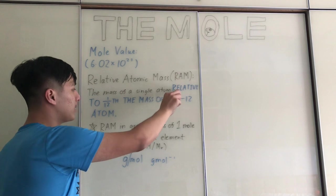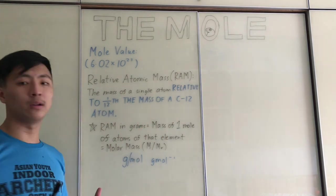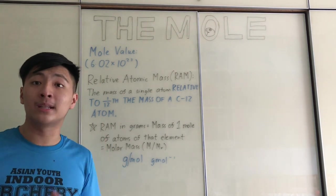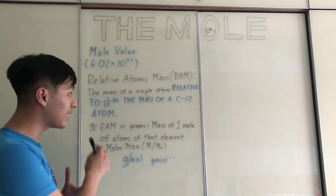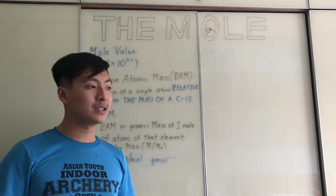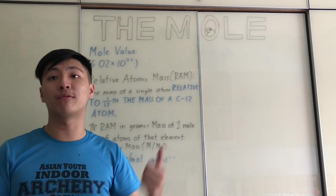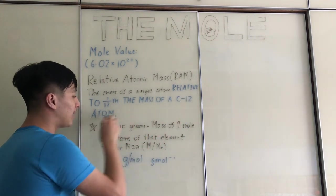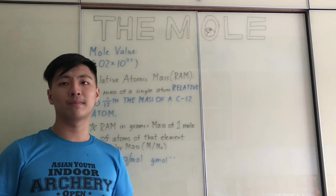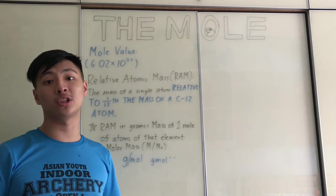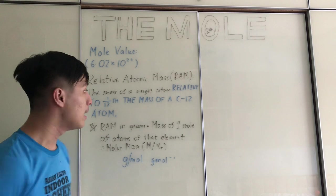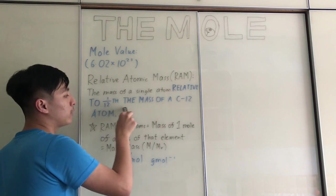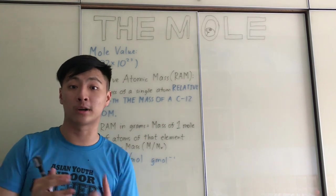Forgetting to write this phrase will only lose you about 1 out of 2 marks, but it's a mark you shouldn't be losing in the exam. The exam board basically gives you things you should be able to memorize clearly. So make sure you write this down so that when you come to the exam, you remember to write 'relative to one twelfth the mass of a carbon-12 atom' to ensure full marks.